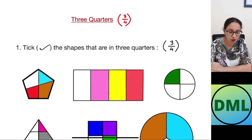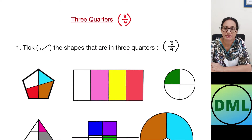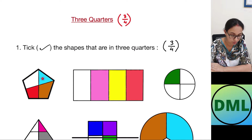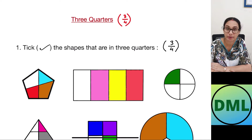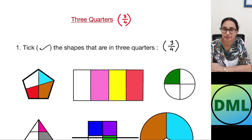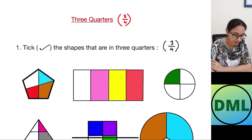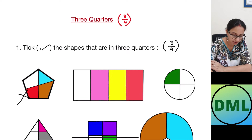Let's see our first shape. This shape has been divided into one, two, three, and four parts. How many parts are shaded? One, two, and three parts are shaded. But are the parts equal? No. So that means this is not my answer.